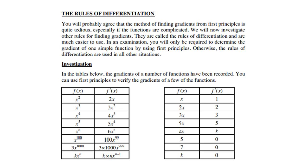Of course, the derivative of variable x is 1. 2x will be 2, 3x will be 3, 5x will be 5, kx will be k, and of course the derivative of a constant k is 0. So, these rules are very important. Make sure that you are familiar with them.